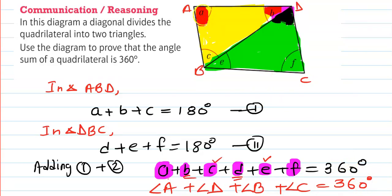So in this way we can prove that, using algebra, angle A plus angle B plus angle C plus angle D equals 360 degrees.